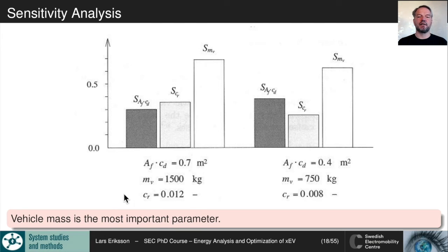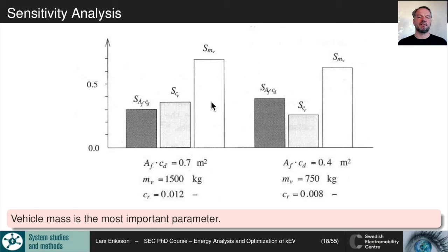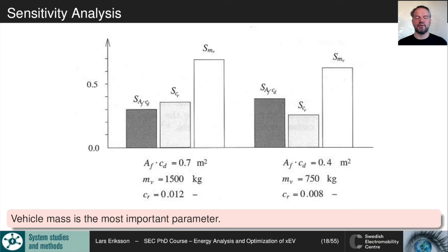For both full-size and small-size vehicles, vehicle mass is the most important parameter for improving fuel economy — the sensitivity is about twice that of rolling resistance or air drag. Adding mass is bad for fuel economy. For a lightweight vehicle, mass is especially important, which explains the major development effort in using lightweight materials to achieve more efficient vehicles.